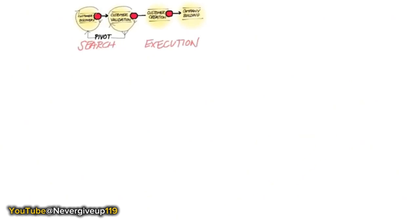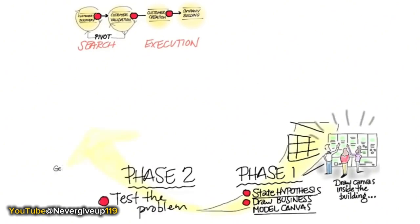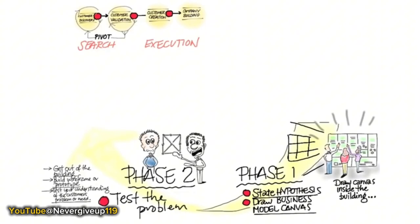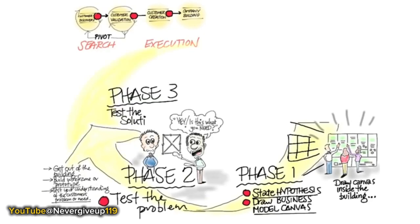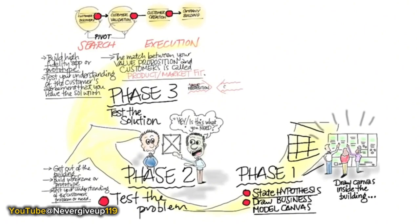Let's look at the first step in customer discovery. Phase one: you state your hypotheses and draw the business model canvas - put it on the wall, get around it with your team, and put up yellow stickies. The next step is you get out of the building to test the problem: your understanding of the customer's problem or need, and how to build the prototype. Then you test the solution - on the web, by building a low-fidelity and then a high-fidelity prototype - and test whether your solution matches customer needs. This match is called product-market fit: the holy grail for entrepreneurs.